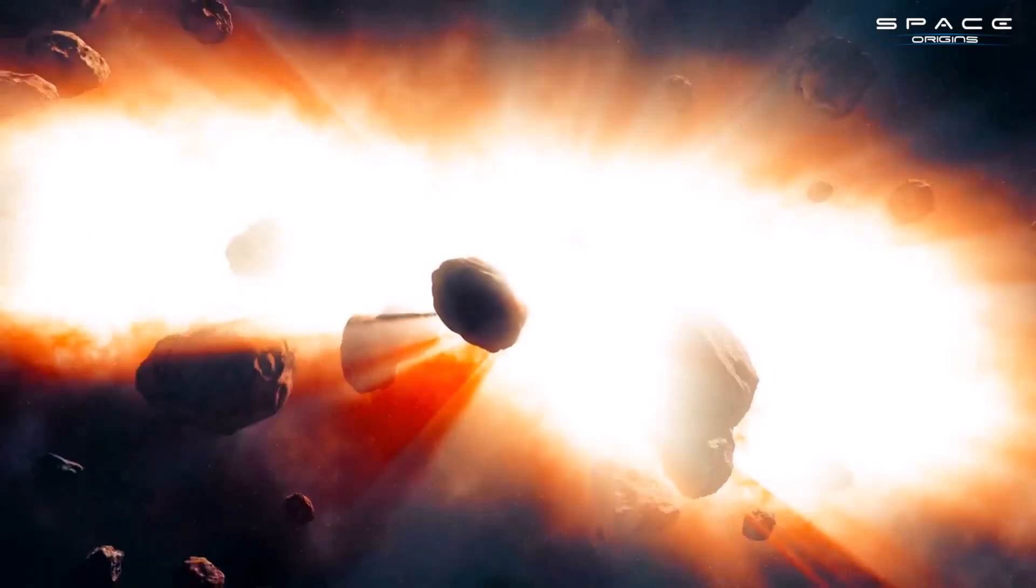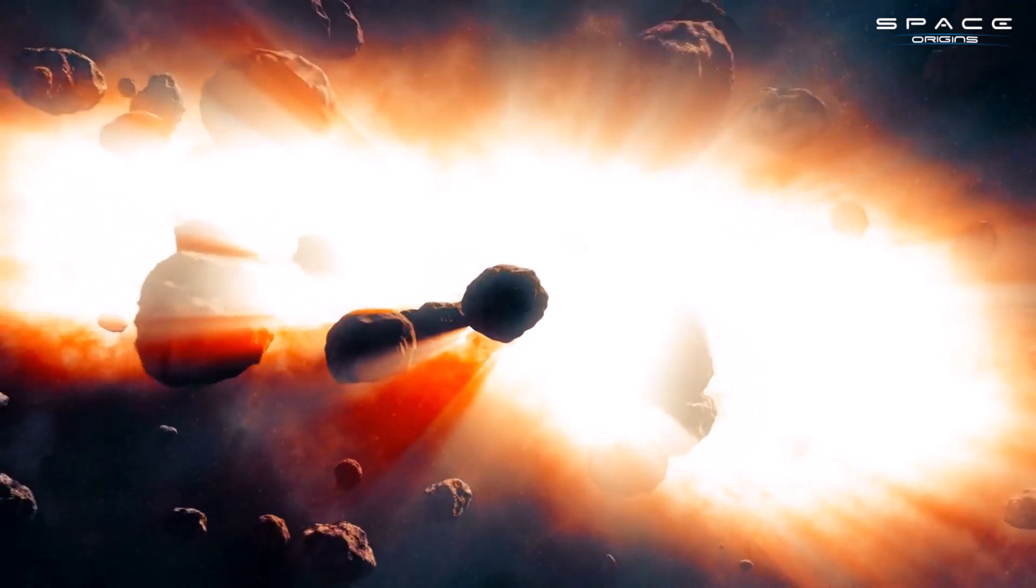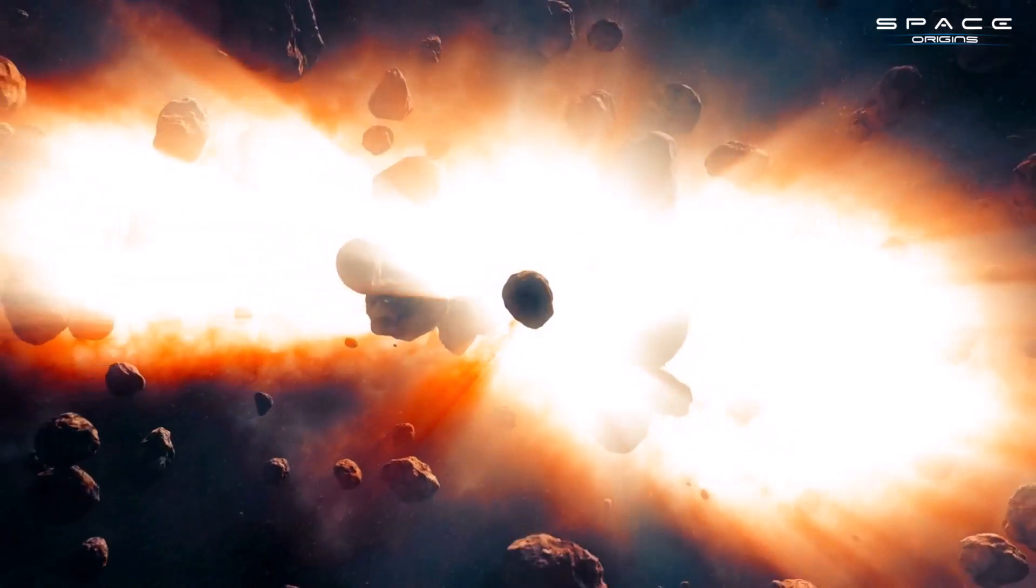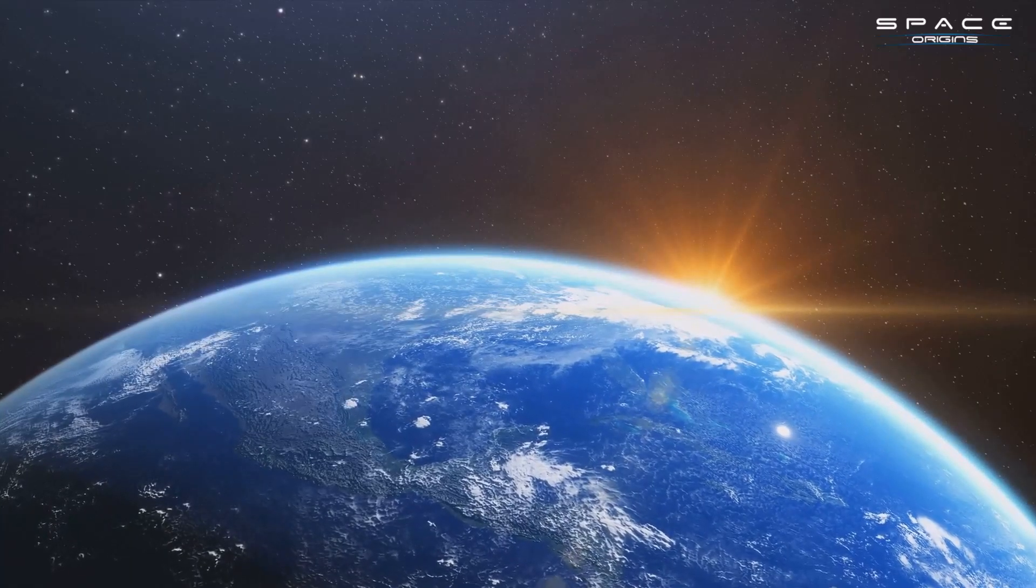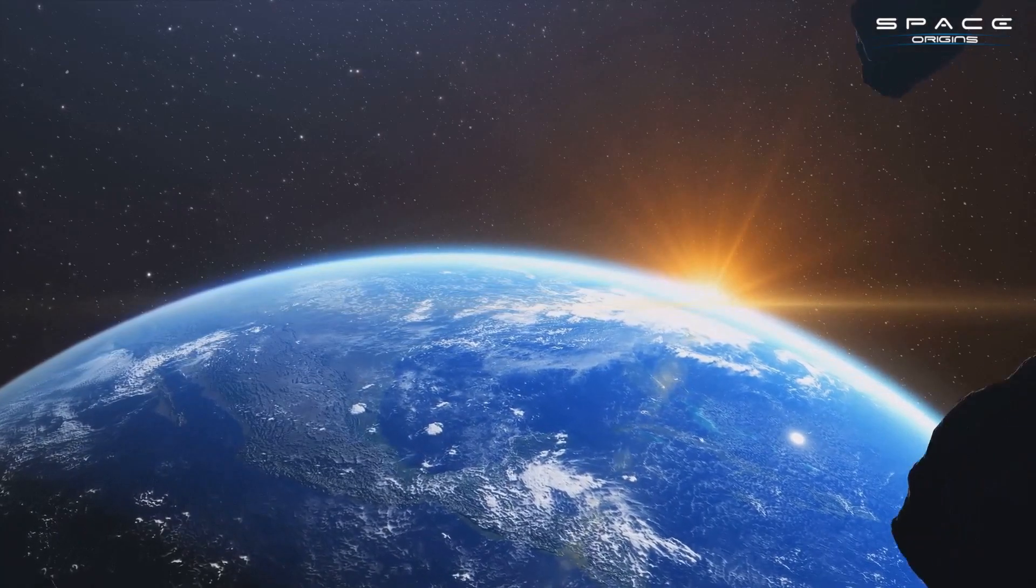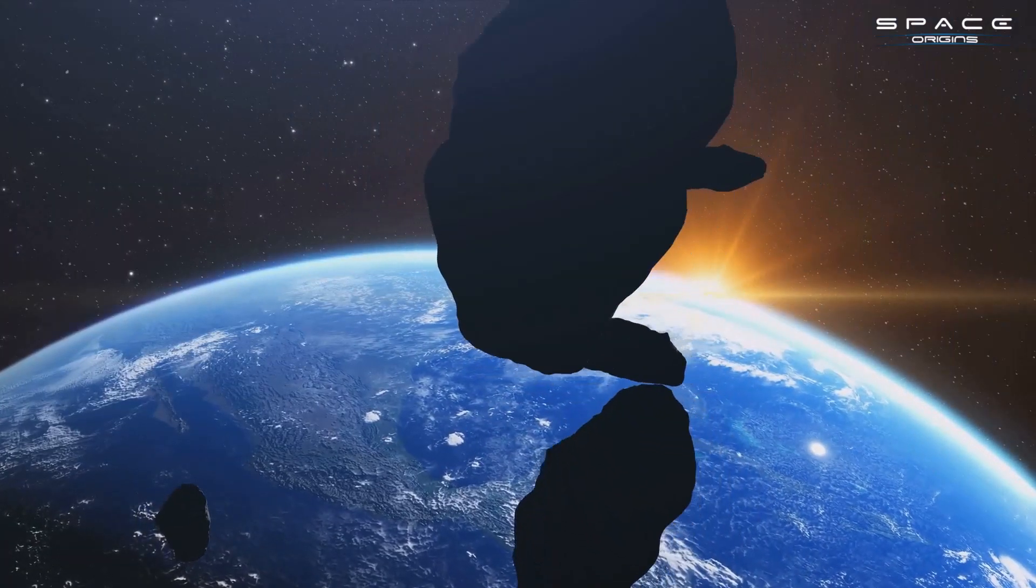Astronomers have worked tirelessly to map the orbits of over 33,000 near-Earth asteroids. They've achieved this remarkable feat by tracking these celestial bodies when they pass through areas of the sky not affected by the sun's glare. However, there's a catch.